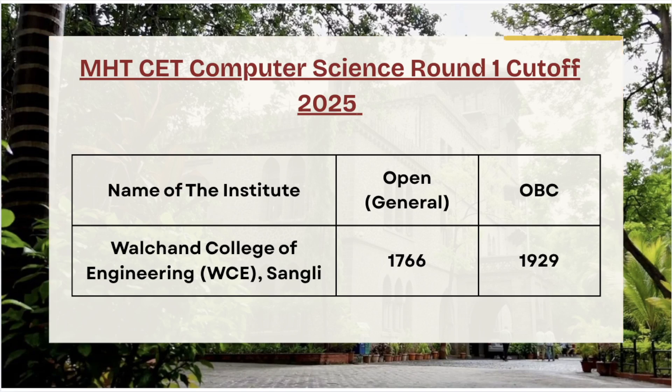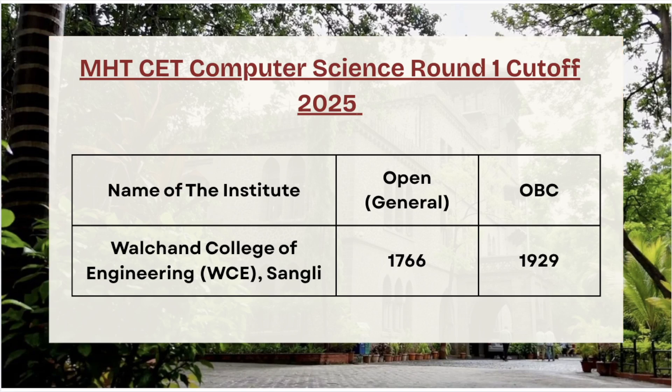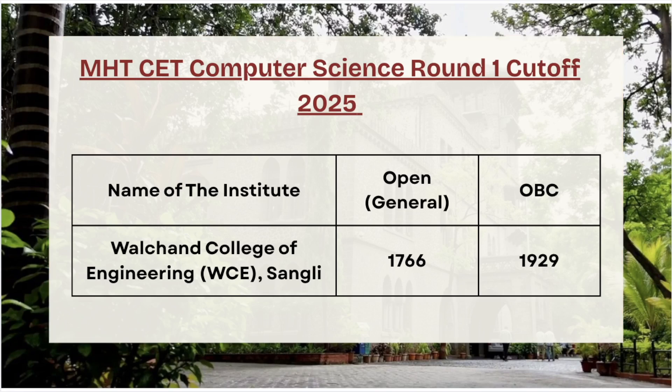Next in the list we have Valchand College of Engineering. For open category the cutoff rank is 1766, and for OBC category the cutoff rank is 1929.